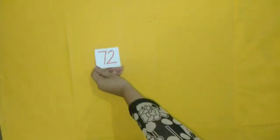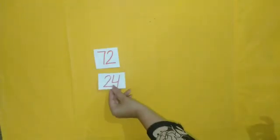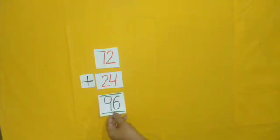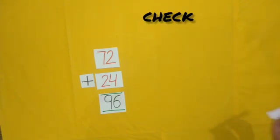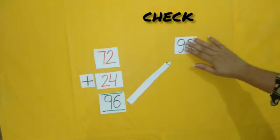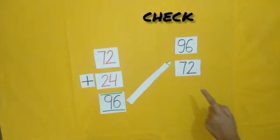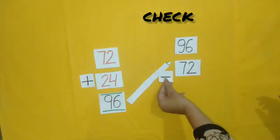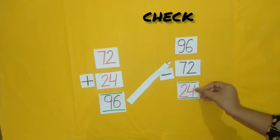Now students, we will solve the sums. When we add 72 and 24, what do we get? Yes, 96. When we subtract 72 from 96, we will get 24. Yes, 24.